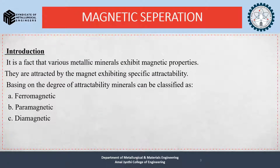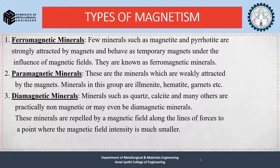Magnetic separation: we all know that there exist minerals which are magnetic and non-magnetic. We also know that most metals are magnetic in nature. Various metallic minerals exhibit magnetic properties and are attracted by magnets exhibiting specific attractivity. Based on this attractability, minerals can be classified into three types: ferromagnetic, paramagnetic, and diamagnetic.